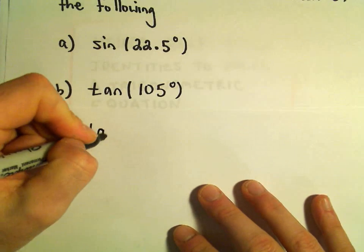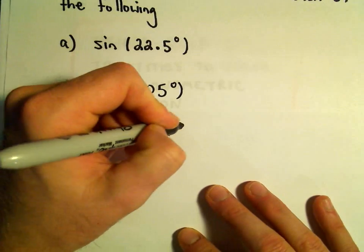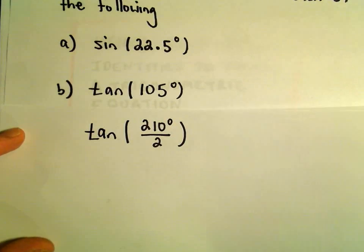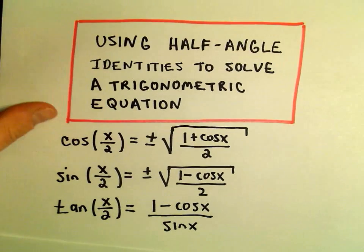Well, let's see, if you double 105 degrees, that would be 210 degrees. So we can write 105 as 210 over 2. And again, now all I'm going to do is just use our identity here.